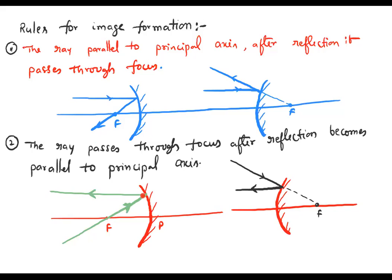The second rule: a ray passing through focus, after reflection, becomes parallel to the principal axis. In case of a convex mirror, a ray appearing to pass through focus, after reflection, becomes parallel to the principal axis.